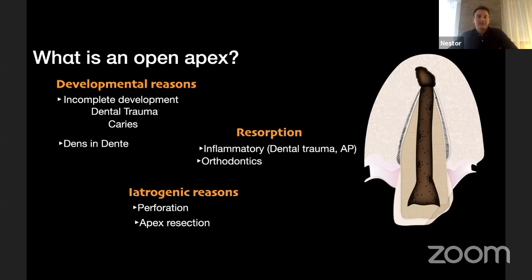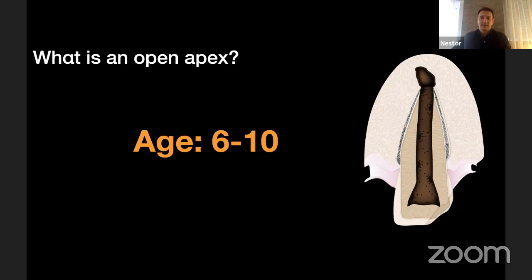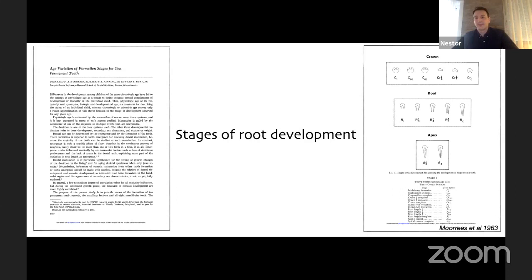However, the number one cause of an open apex situation is dental trauma, and this especially happens between the early and middle ages of the mixed dentition — meaning between ages six and ten. Let's now see how the stages of root development were classified in the past. Maurice in 1963 was the first to give a classification of root development and apex formation.